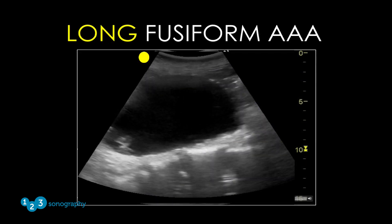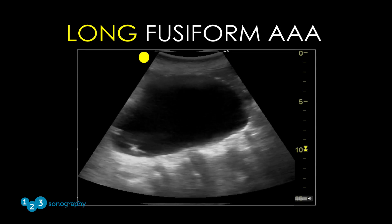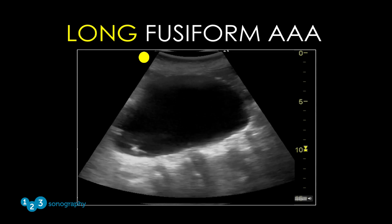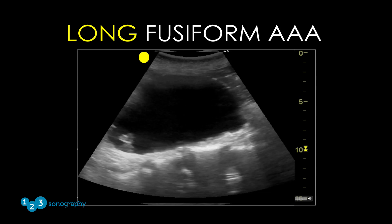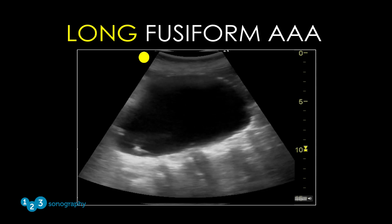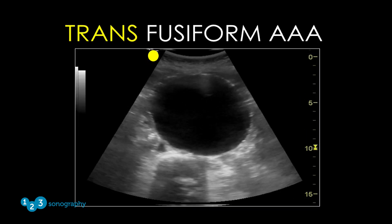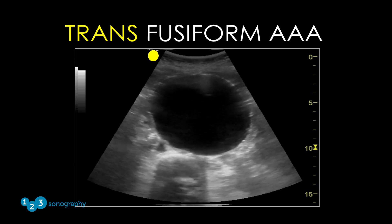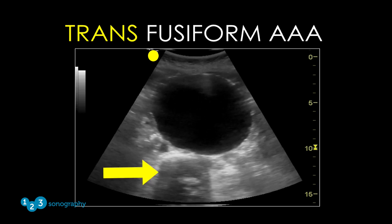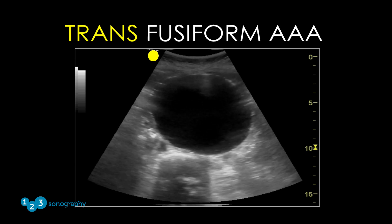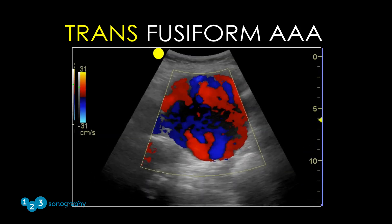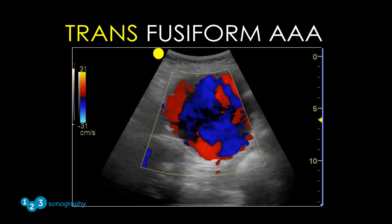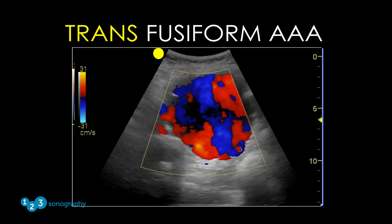This video demonstrates a longitudinal view of a fusiform abdominal aortic aneurysm measuring approximately seven to eight centimeters. This is the transverse view of the same aneurysm — you can easily see the lumbar spine posterior to the aneurysm. When Doppler color flow is applied, typically a turbulent blood flow pattern is visualized.